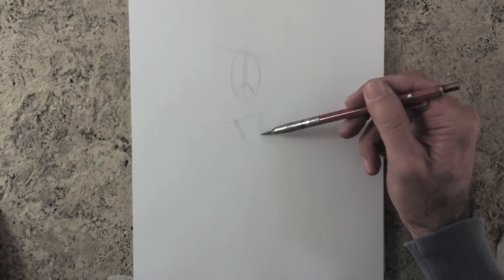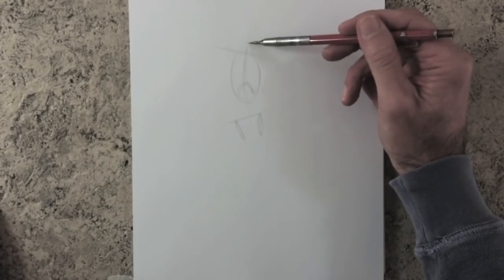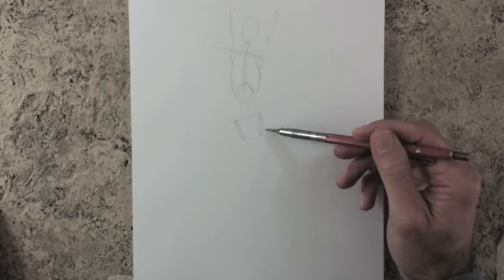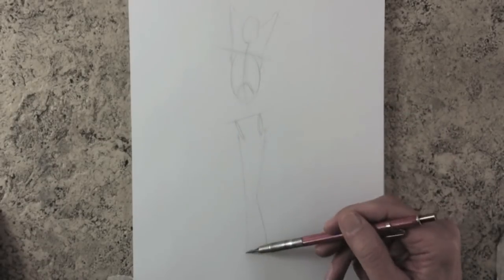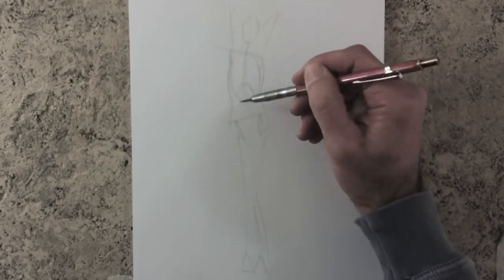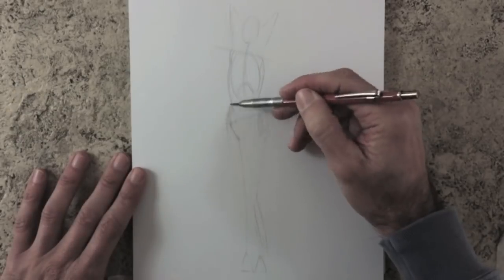Then the ovals for the pelvis, the head, and the bones for the arms and legs. Having this basic and simple structure, it is much easier to then draw the outside.